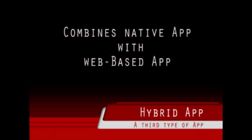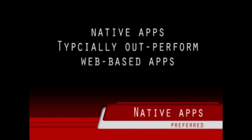A third type of app is a hybrid app, which involves some downloading of instructions to your device but also makes use of web-based technologies to run the app. For example, you may download an app onto your device to access Twitter or Facebook, but the actual program running Facebook and Twitter remains on their servers. Native apps are considered more personal and tend to outperform web-based apps. Also, web-based apps may be here today and gone tomorrow. Thus, you have the simple answer to what is an app.